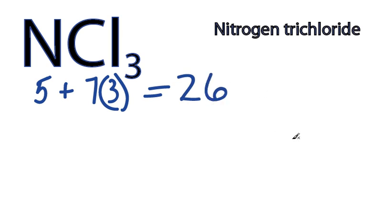Nitrogen is the least electronegative, so nitrogen goes right there at the center, and we'll put the chlorines around it like that.